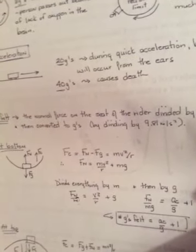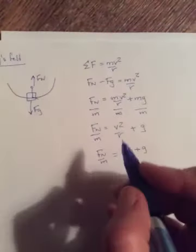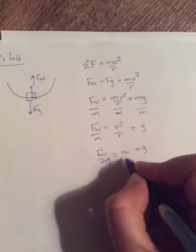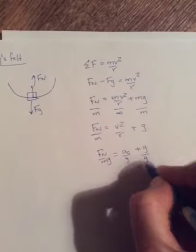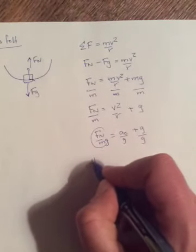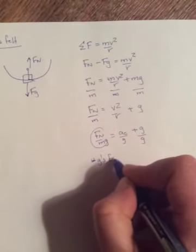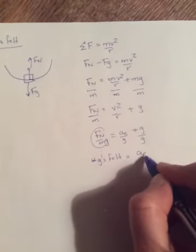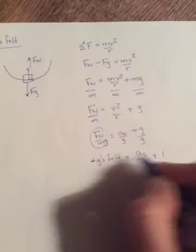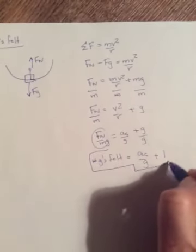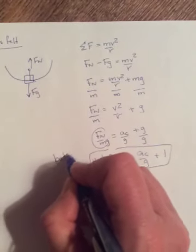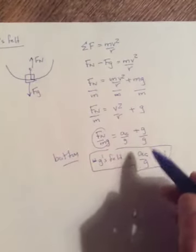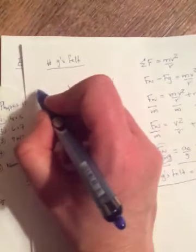But now to finish to get the number of g's felt. The normal force on the seat of the rider divided by the mass. We did that. And then convert it into g's by dividing by 9.81. So we need to now divide by g. So divide by g, divide by g. So this becomes the number of g's felt. And this is ac over g plus, and this just becomes 1. So when you're at the bottom of a loop, it's ac over g plus 1. This is bottom.